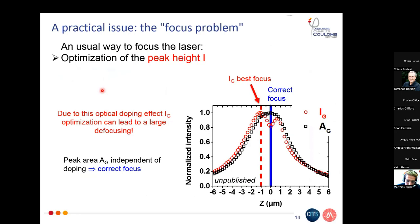Another particular issue: when you want to focus on your sample, you typically look at the peak height intensity. But due to this doping effect, if you change the focus (z position) and look at this intensity, there is a complex behaviour and the optimised focus for peak height is not at the true focal position. If instead you look at the integrated intensity of the peak, this parameter is independent of doping, and it gives the correct focus position. To summarise: due to this reversible optical doping effect, you can be wrong when using G peak intensity to find focus — this won't happen all the time, but it can happen.